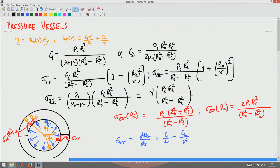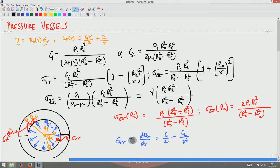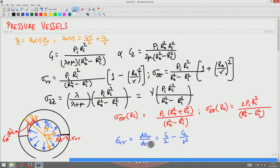We can also compute the strains from the displacement expressions: epsilon_rr is ∂u_r/∂r = c1/2 − c2/r², and epsilon_θθ is u_r/r = c1/2 + c2/r². From these expressions you can compute the strains since you know what u(r) is.